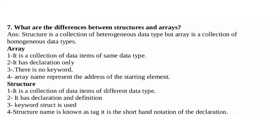What are the differences between structures and arrays? Structure is a collection of heterogeneous data type but array is a collection of homogeneous data types. Array is a collection of data items of same data type. It has declaration only. There is no separate keyword. Array name represents the address of the starting element.